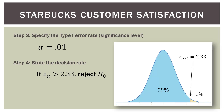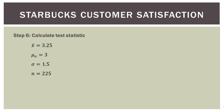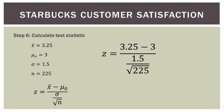Step five: gather the data. Our sample size was 225 and our sample mean was 3.25. Let's calculate our test statistic — we have our four inputs: sample mean, hypothesized mean, sigma, and sample size. Substituting into the same Z formula, we come up with a Z-test value of 2.5.